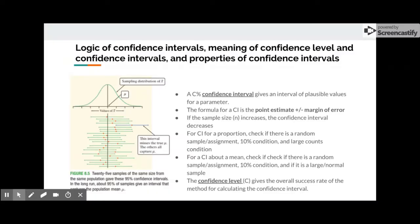A confidence interval gives an interval of plausible values for a parameter. The formula is a point estimate plus or minus the margin of error. In the picture to the left, these 25 samples of the same size from the same population gave these 95% confidence intervals. In the long run, about 95% of the samples give an interval that captures the true population mean. If the sample size increases, the confidence interval decreases.